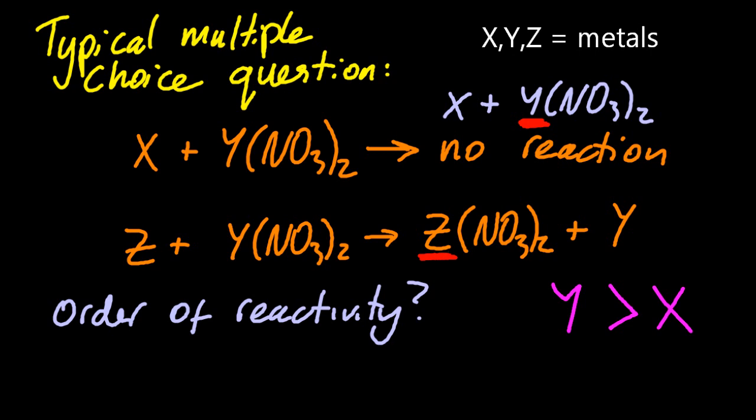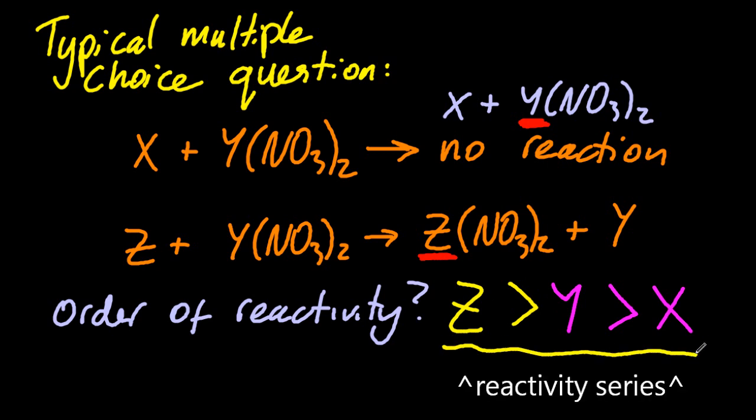And Z ends up as an ion in the second one. So Z is more reactive than Y. So the reactivity series is Z beats Y beats X.